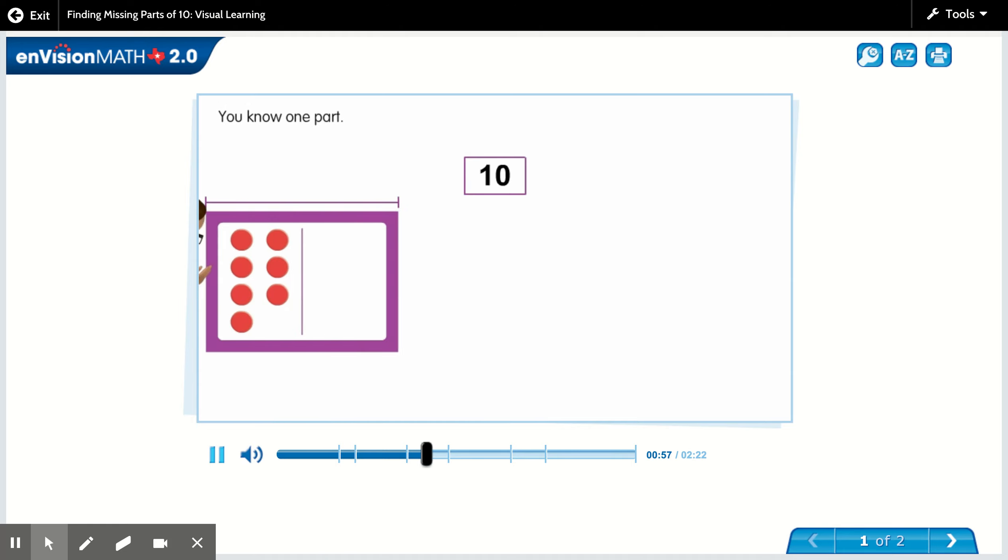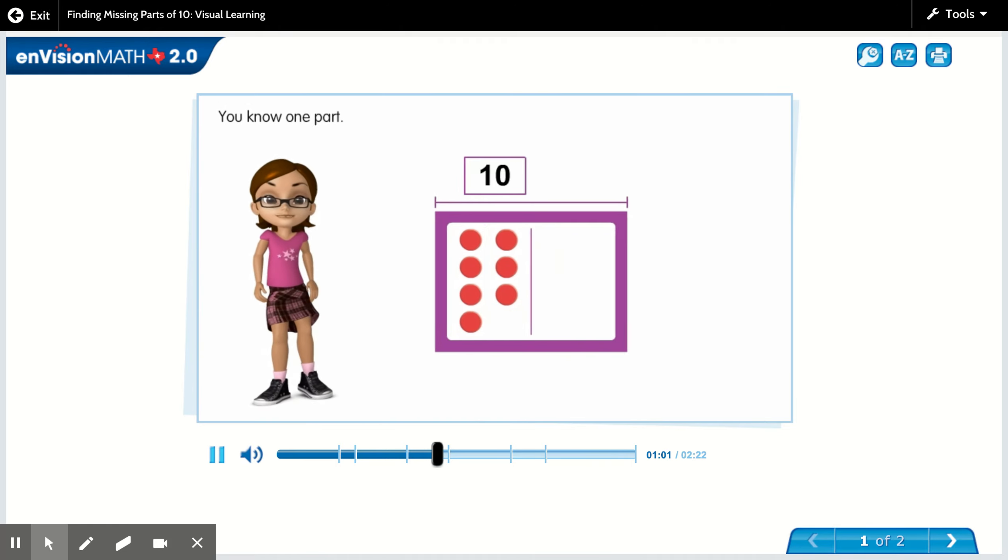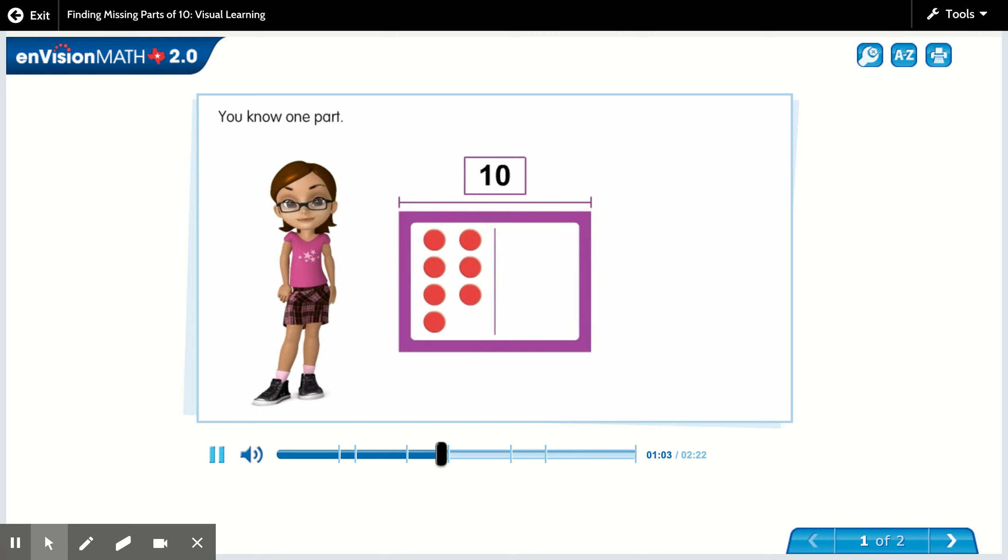You know one part. What is the part you know? Seven is the part you know. Why is seven the part that you know? It's because you saw seven balls.